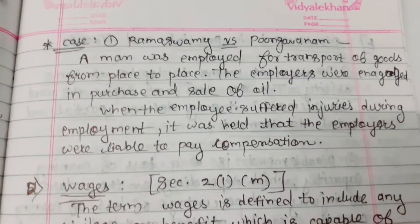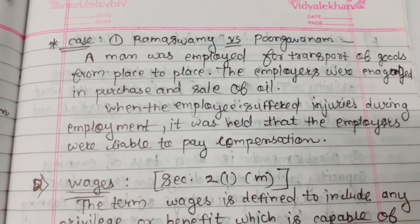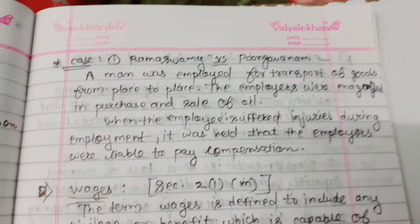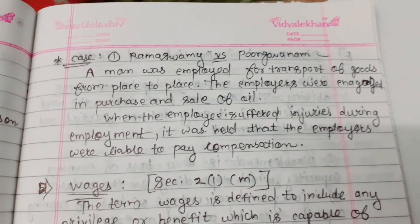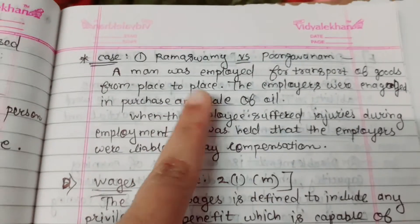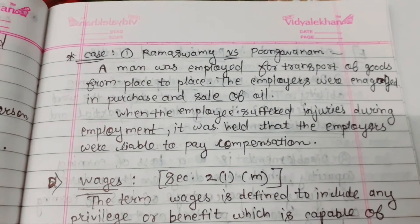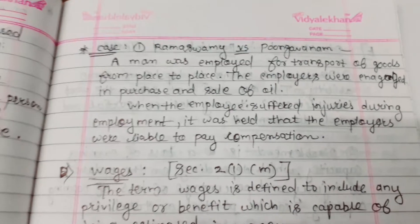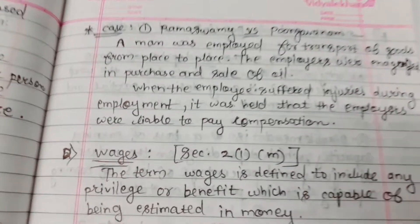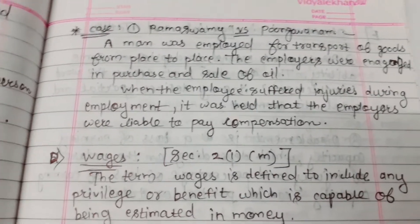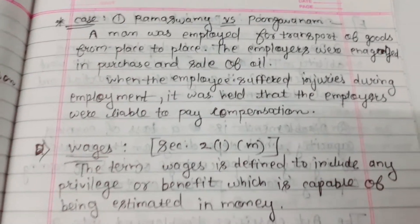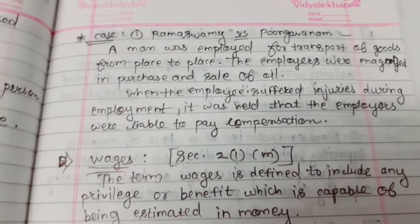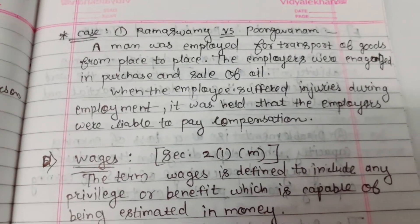The case is about Ramaswami vs. Pongavanam. A man was employed for transport of goods from place to place. The employers were engaged in the purge and sale of oil. When the employee suffered injuries during the employment, it was held that the employers were liable to pay compensation.